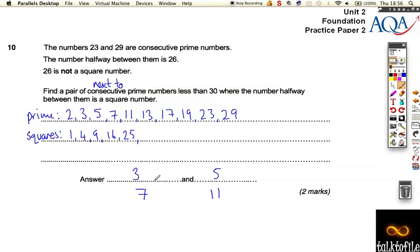So you could put 3 and 5 or you could have included 7 and 11. Okay, so you could have had either of those answers, but you had to have 3 and 5 together or 7 and 11 together.